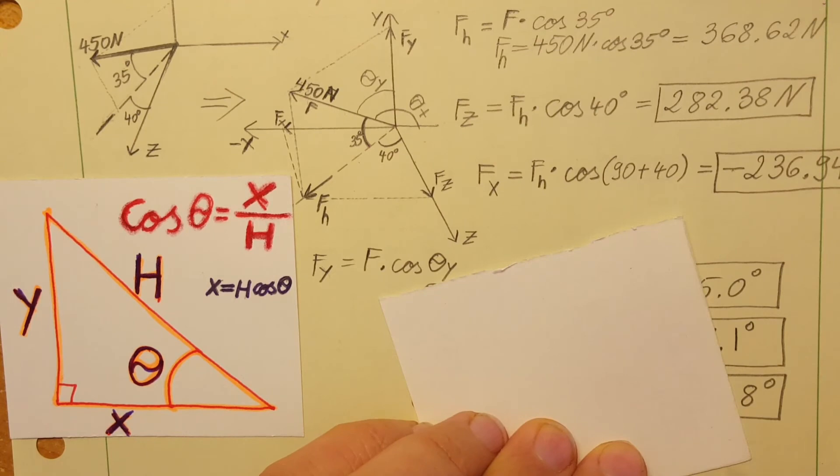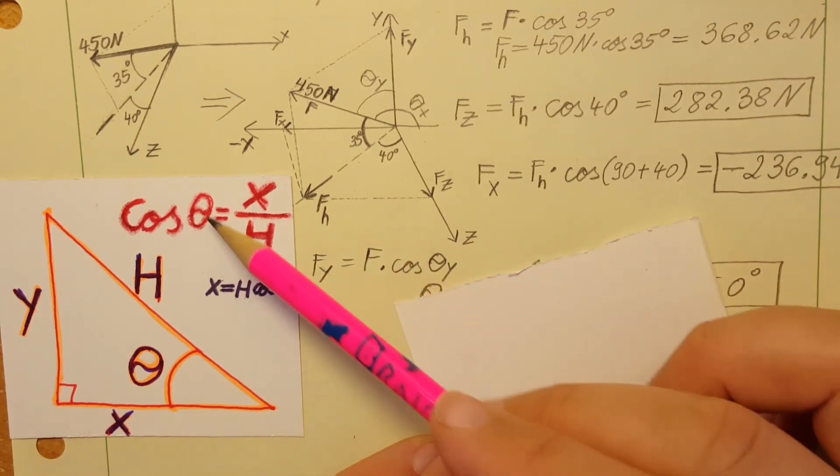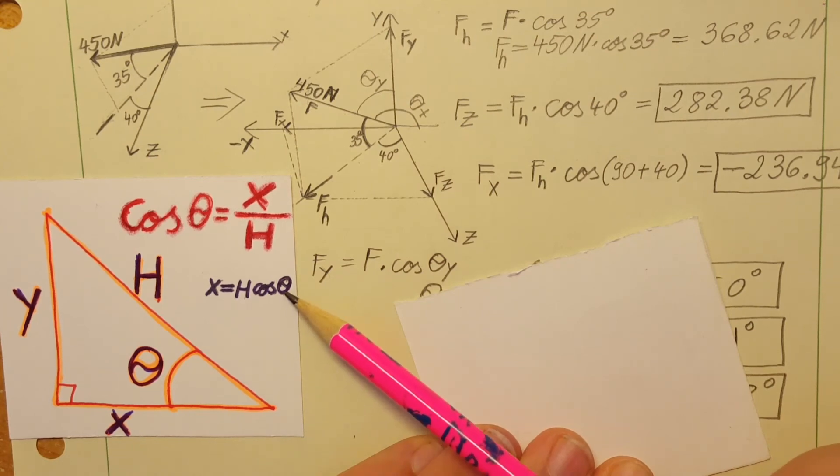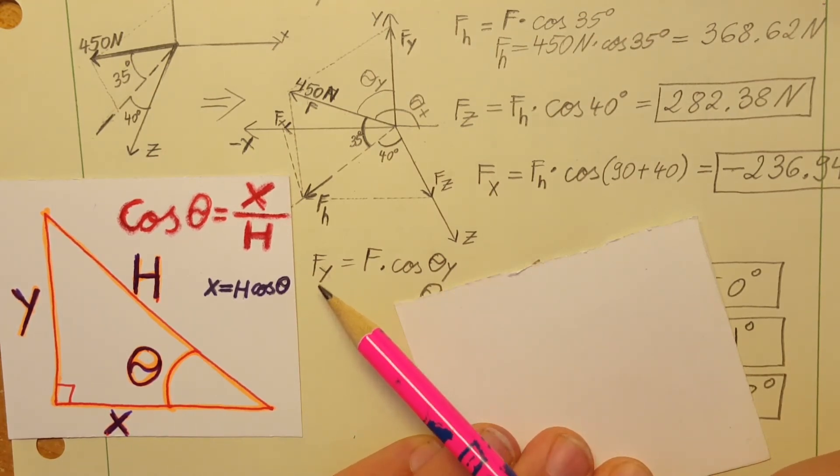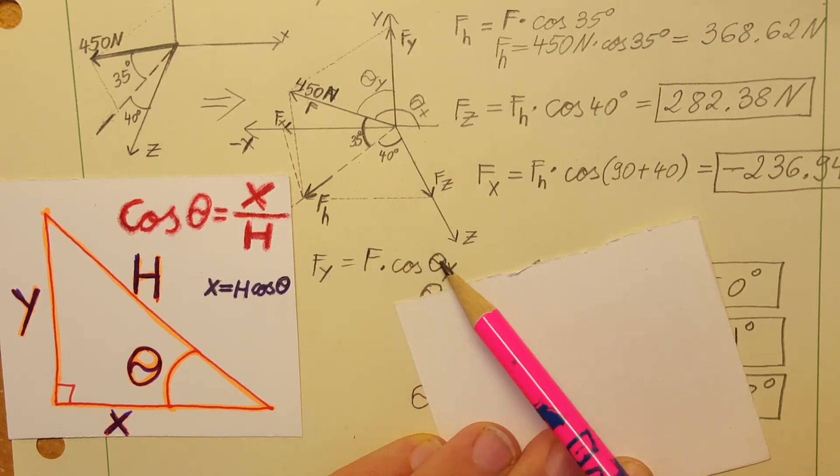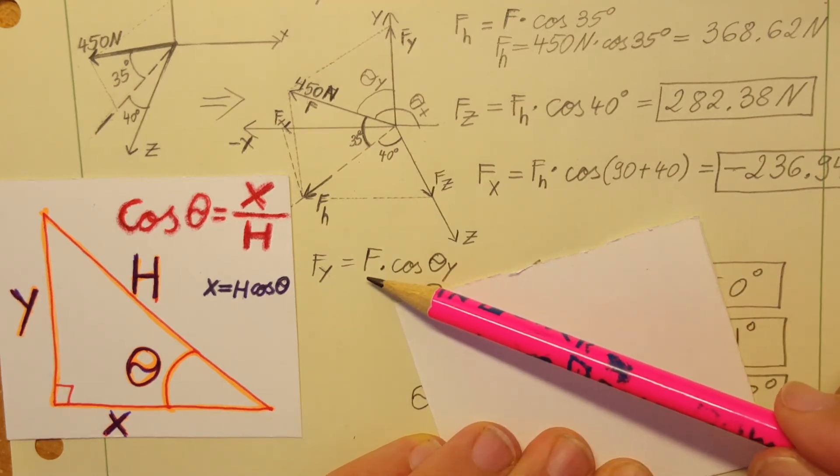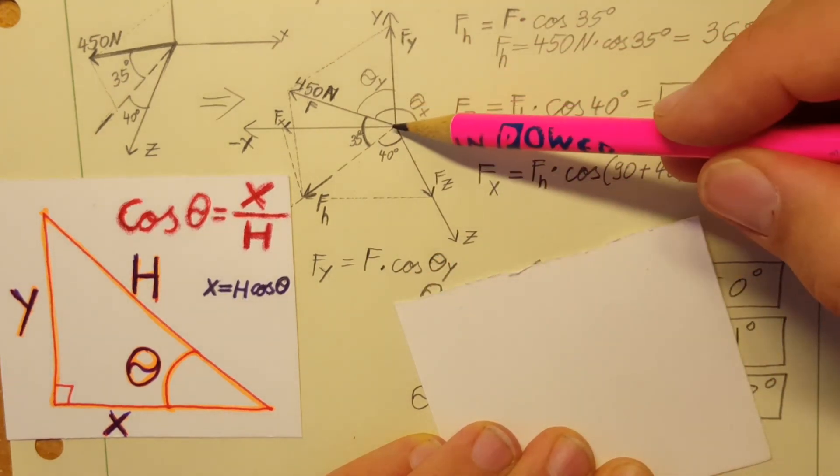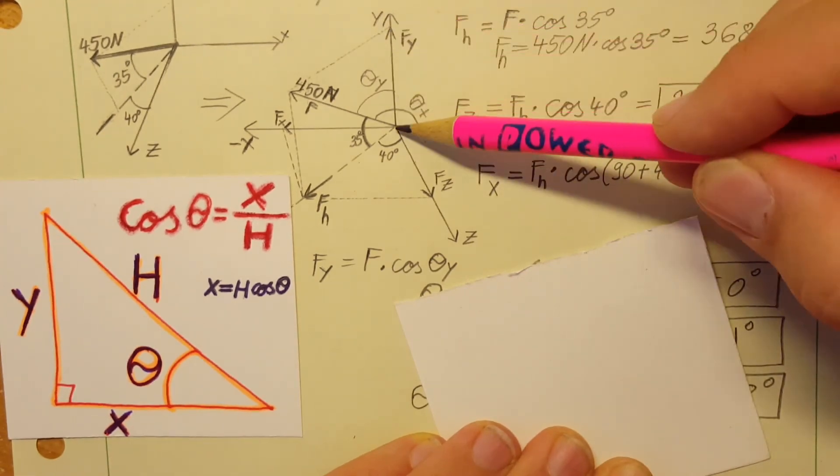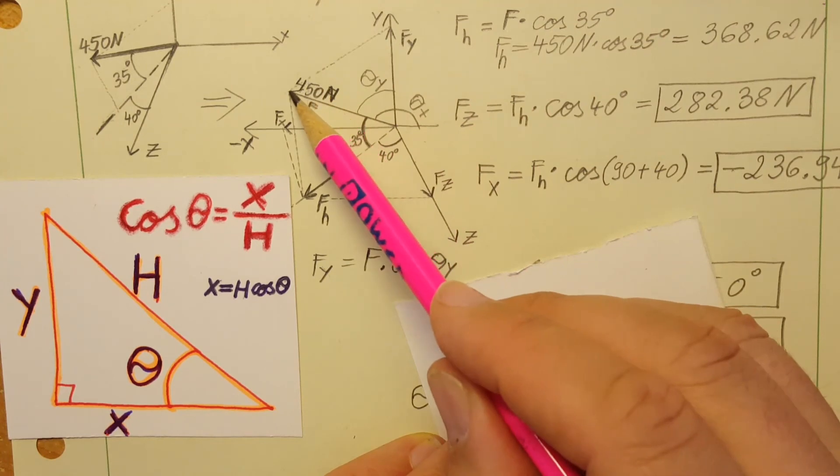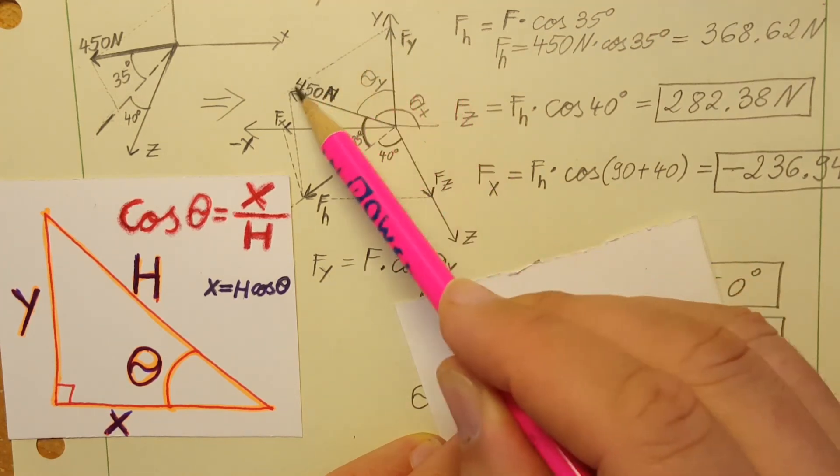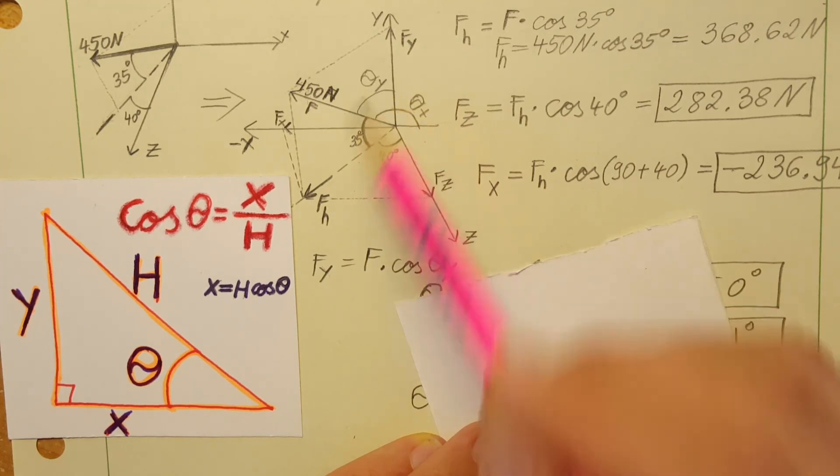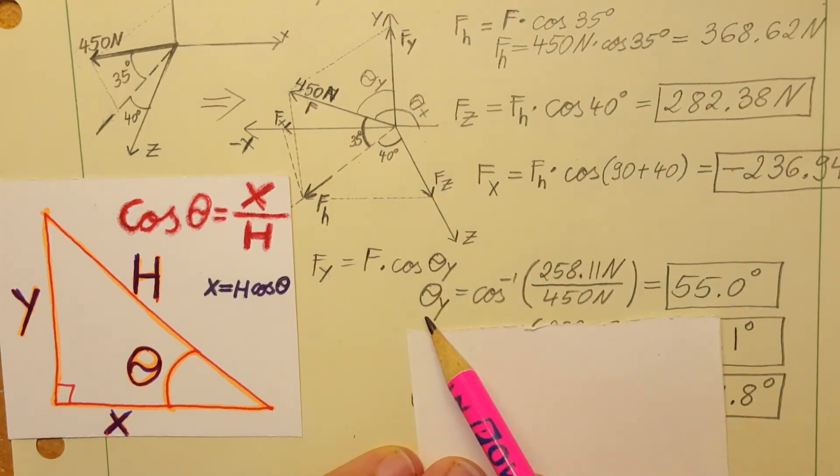Okay now we're gonna start working on the angles. We're gonna use this formula again we're gonna solve for theta from it so I'm gonna find theta of Y first. So I'm gonna write it up FY equals F times cosine of theta Y, so this would be from the triangle that is from FY, F and closed in with a line from the tip to tip and we are looking for theta of Y. I solve for theta of Y with inverse of cosine, plug in and we get 55 degrees.